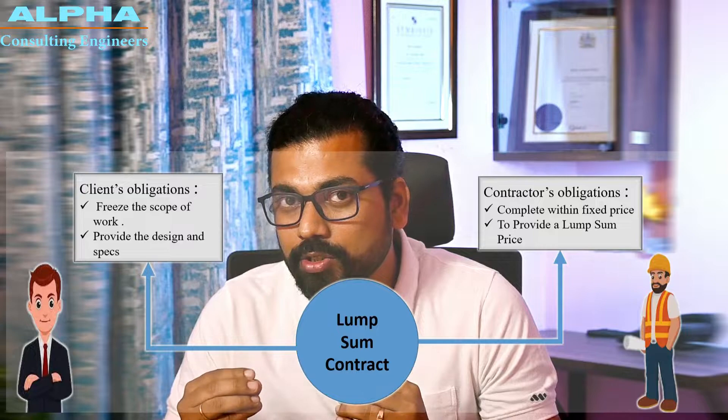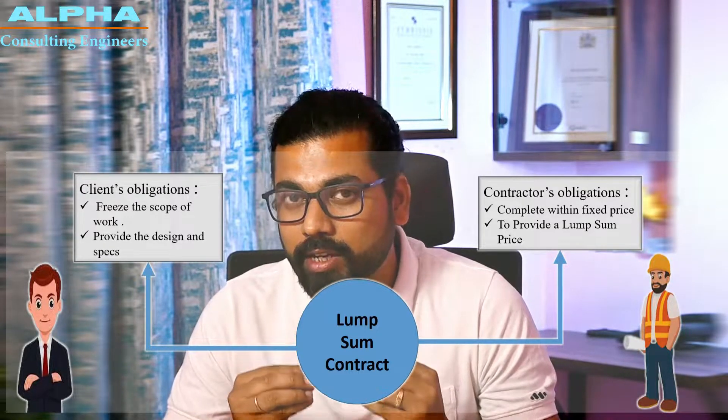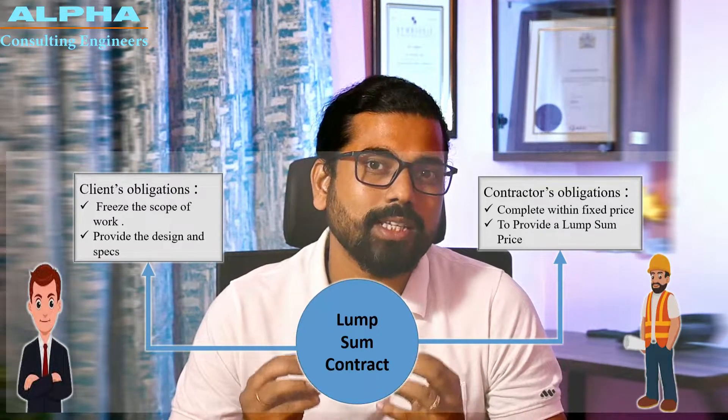The contractor must ensure that the price will not vary during execution of the project. The only situations where price can change are if there is a change in scope, a change in items, or a design change from the client's end. The risk in a lump sum contract is shifted towards the contractor, who provides a lump sum price against design, scope, and BOQ that will not be changed during the execution stage.